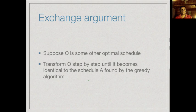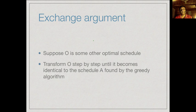Our goal is to argue that the schedule we produced by sorting jobs by deadline is as good as any optimal schedule. Here, unlike the interval scheduling problem where we just showed equal size, we will take an optimum schedule O and step by step transform it into one that is the same as our schedule A — this is called an exchange argument. We start with O and keep moving things around preserving optimality until we transform O into our greedy schedule A.